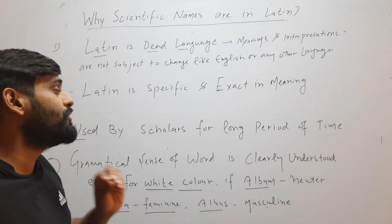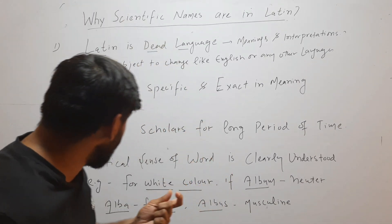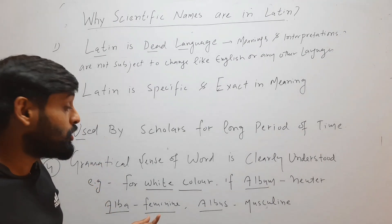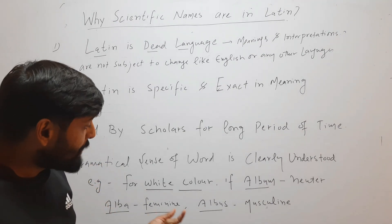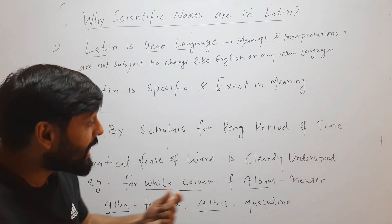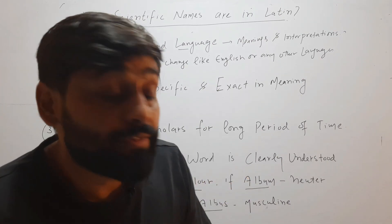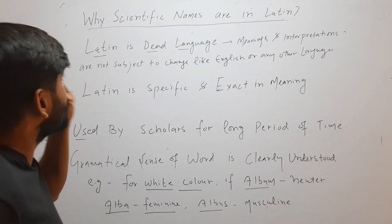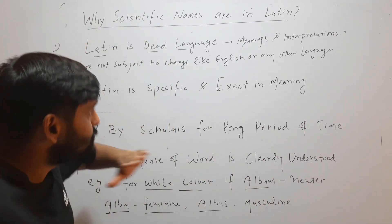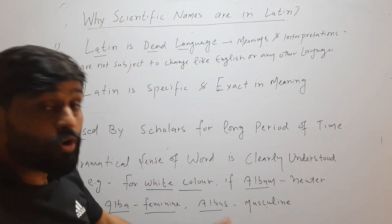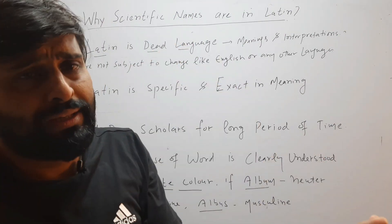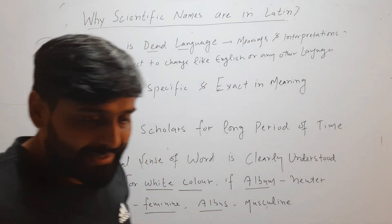The last reason is that the grammatical sense of words is clearly understood in Latin. For example, 'alba' is a Latin word used for the female form, 'albas' is used for the male form, and 'album' is used for the neuter form. So that is why scientific names are written in Latin — it is a dead language, very specific and exact, used by scholars for a long time, and its grammatical sense is clearly understood.